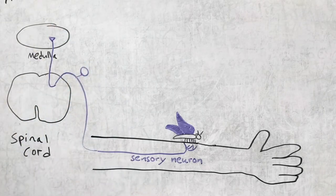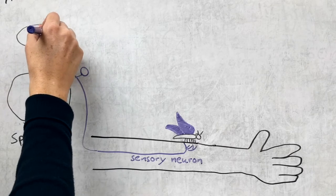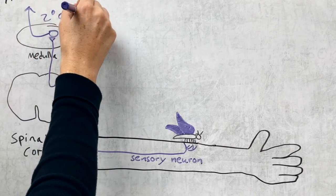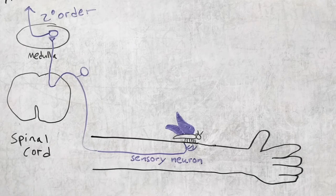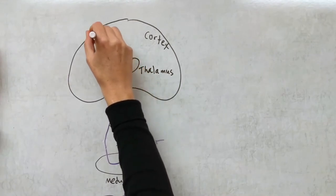As you can see, the sensory neuron is quite long. In the medulla, the sensory neuron releases neurotransmitter onto the second-order neuron, which crosses over to the other side of the brain and extends into the thalamus. Remember that the thalamus is an important sensory relay station.